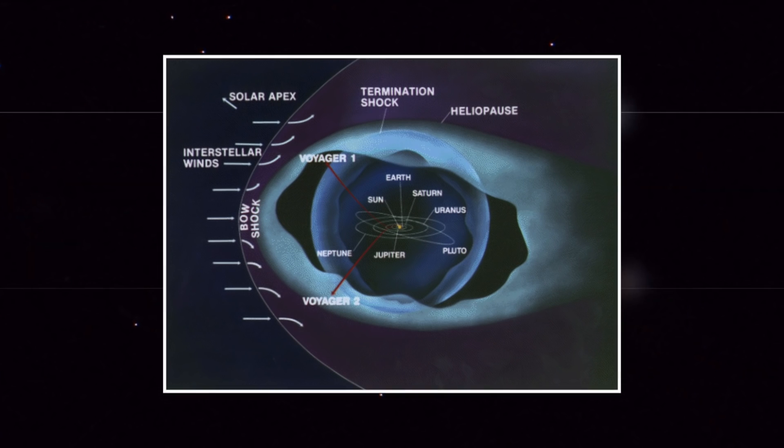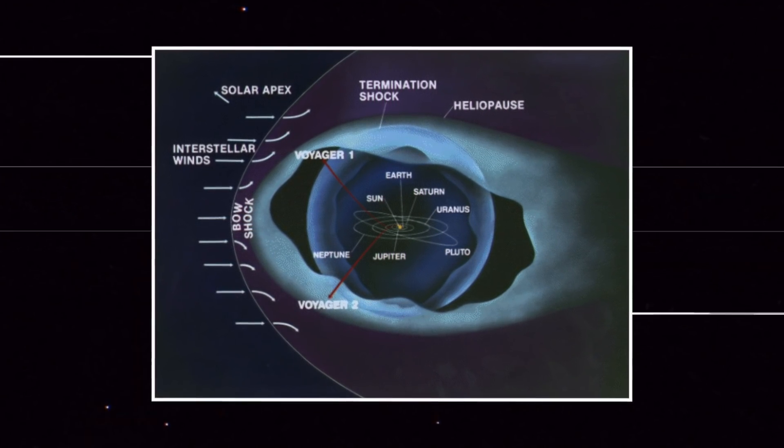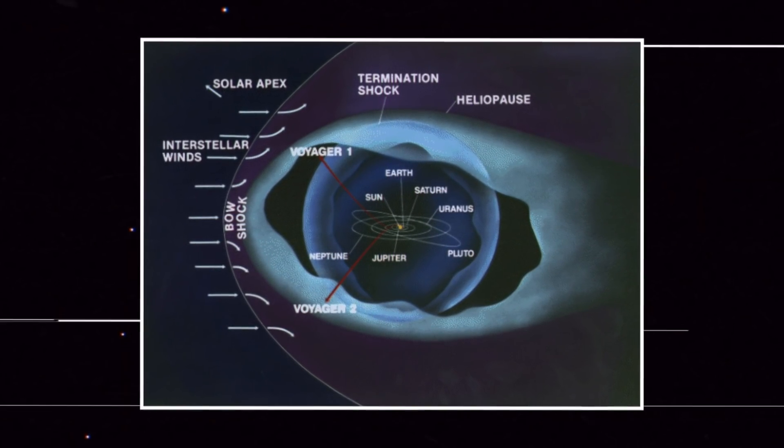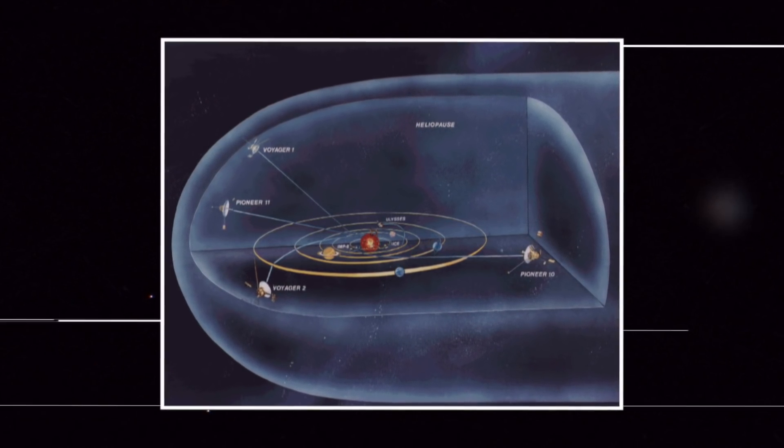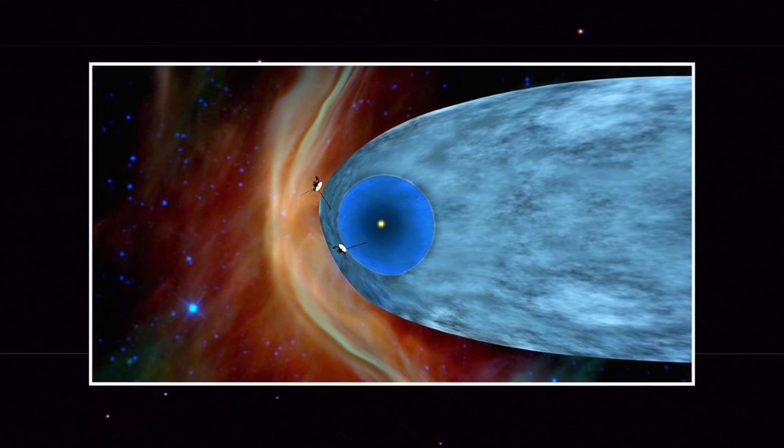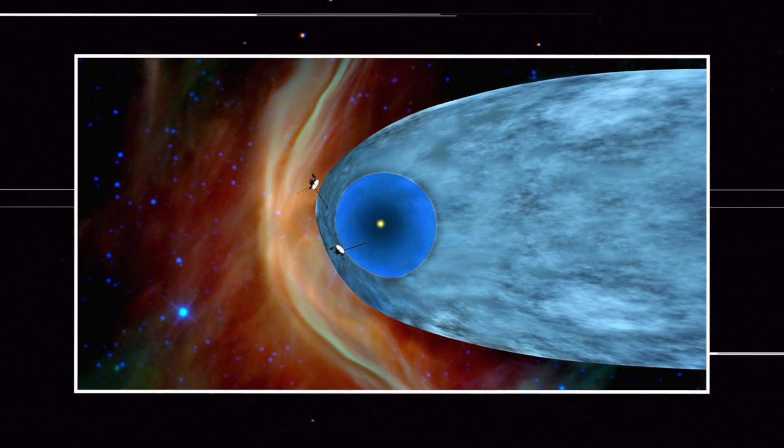Six years before that, Voyager 1 entered interstellar space and felt the same thing that was now being experienced by its fellow craft. This gave scientists the proof that Voyager 1 was right and there is something in space that is creating a density gradient.